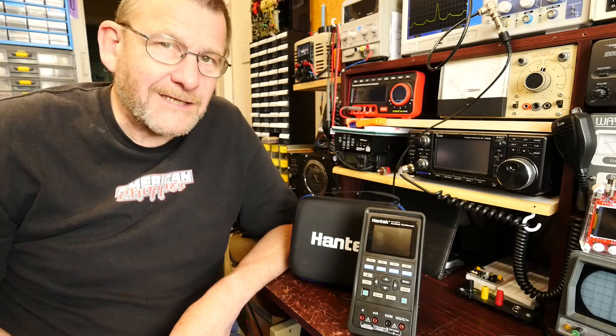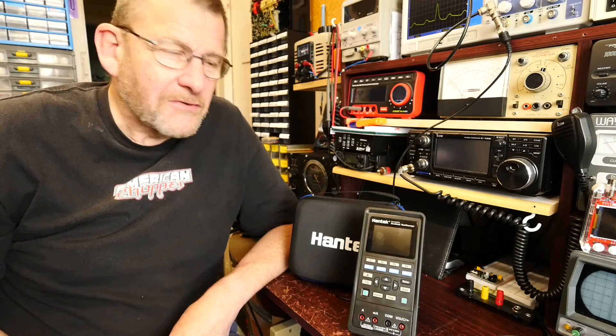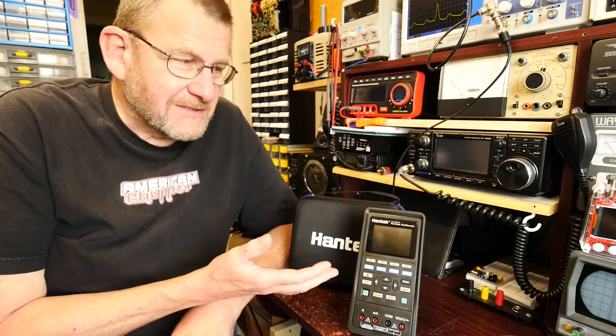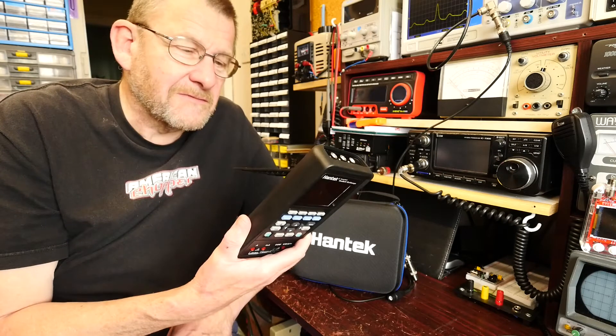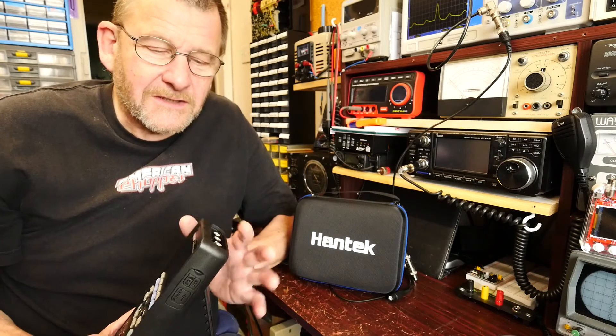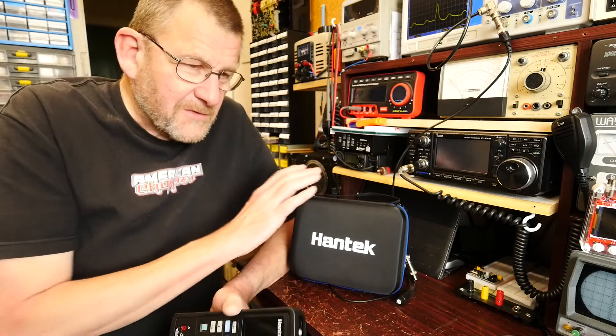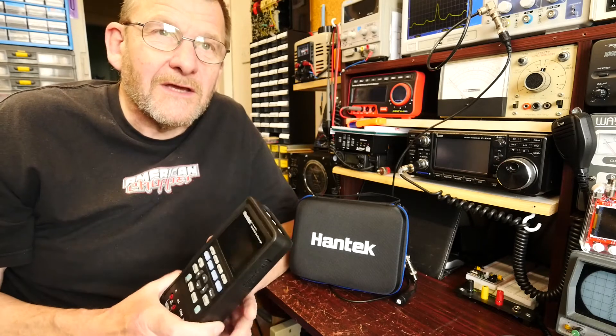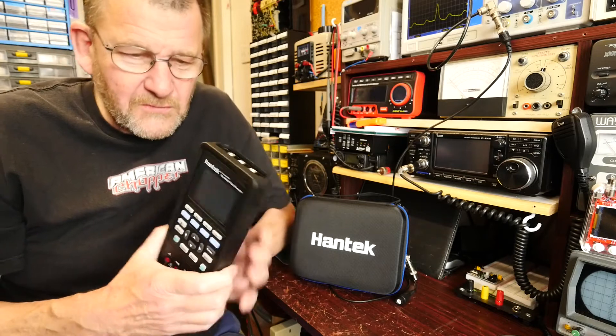Well hello again and welcome to another video from Lockdown Electronics with me Bill. This time we're going to do a little mini review of this latest acquisition, the Hantek 2D72 handheld oscilloscope and digital multimeter. It also includes a signal generator and comes in a nice little case with probes, leads, charger, and it's quite a chunky little beast.